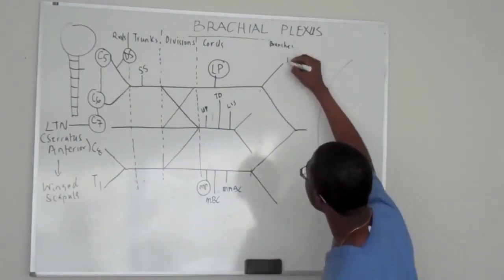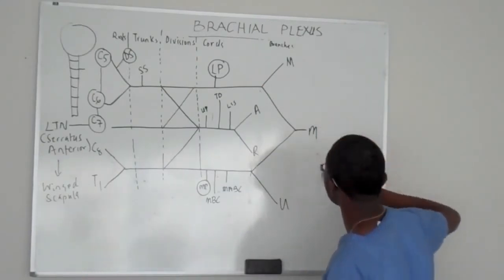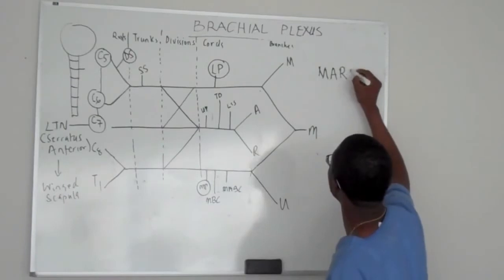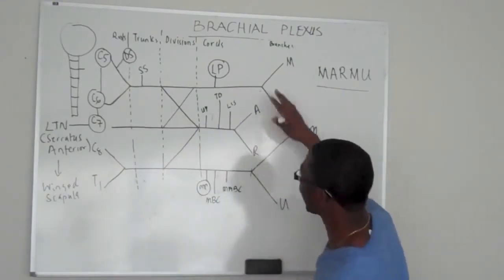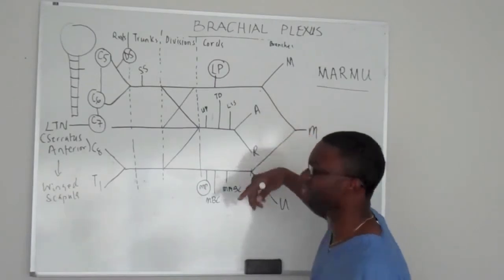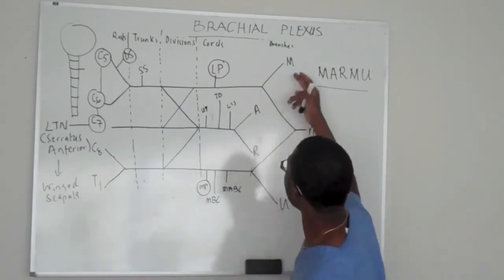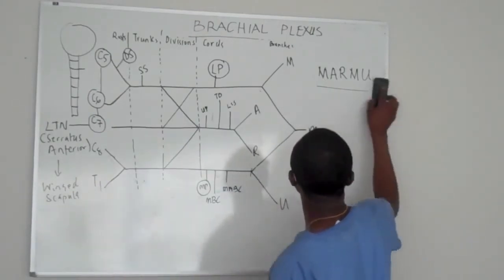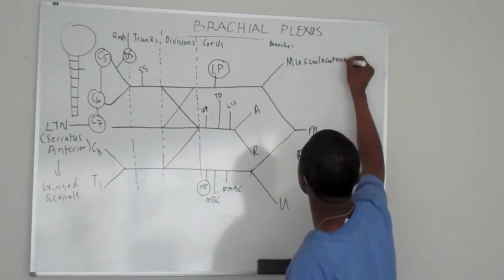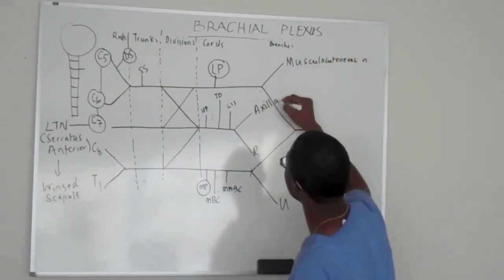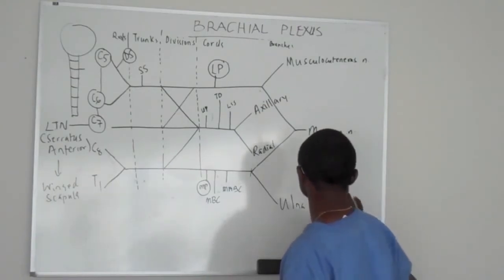This is how I want you to label it. You start M-A-R-M-U — Marmu. It's important that you know this because students often flip the radial or axillary nerve and wonder which one comes first — radial or axillary — and then you start to confuse yourself. So just M-A-R-M-U: the first M is Musculocutaneous, A is Axillary, R is Radial, M is Median nerve, and U is Ulnar nerve.